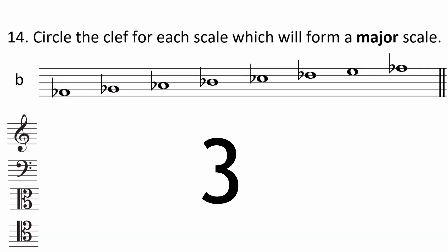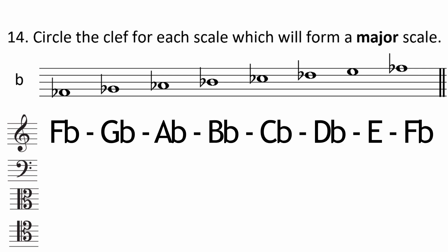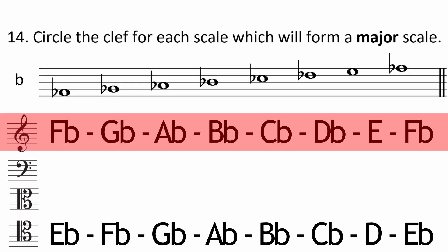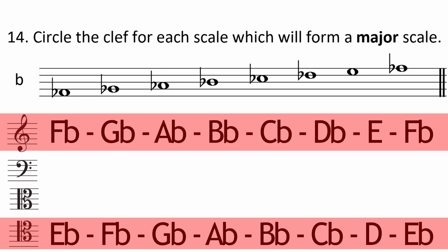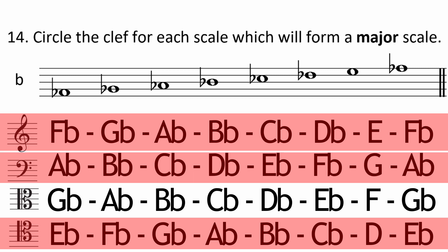What about this example? Treble clef is ruled out because E and F flat are the same note. Tenor clef is ruled out because it starts with a semitone. Both bass and alto clef check out so which is the correct answer? Well the question is asking for a major scale. Bass clef gives us a gap of three semitones between the sixth and seventh note meaning it's a harmonic minor. It's A flat harmonic minor. Alto clef gives us the pattern tone, tone, semitone, tone, tone, tone, semitone and therefore is a major scale so the answer is alto clef giving us G flat major.